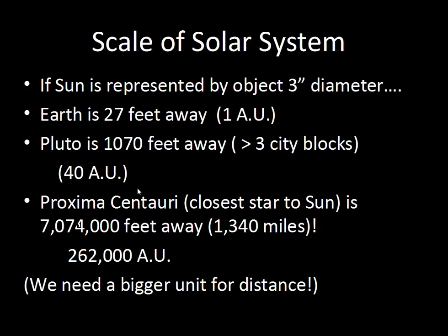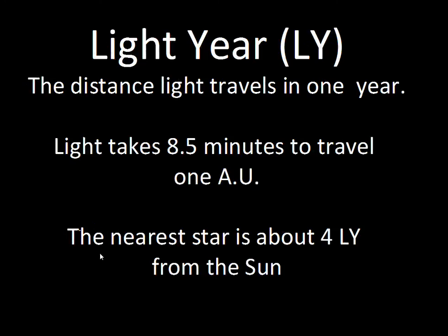When we start to get to the stars, the astronomical unit is no longer a convenient ruler. The closest star to the Sun is roughly 262,000 astronomical units away, so we get into very large numbers. We don't like big numbers, so let's pick a bigger ruler.